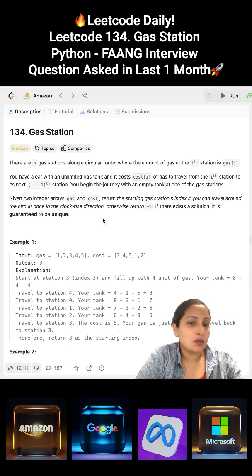If that is not possible, you have to return minus 1. If there exists a solution, there would always be a guaranteed unique solution. You cannot have multiple solutions.